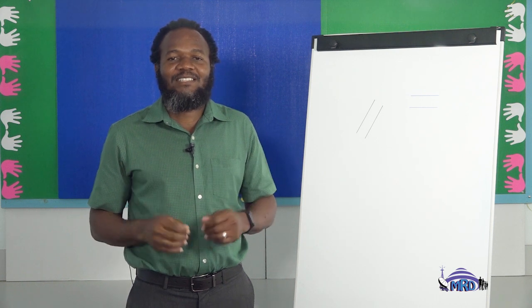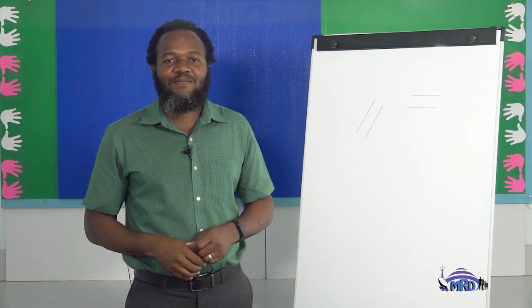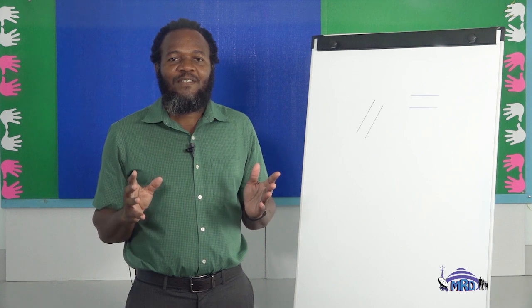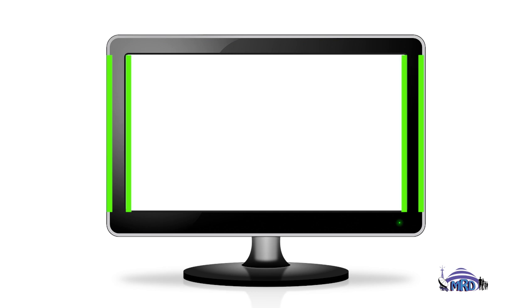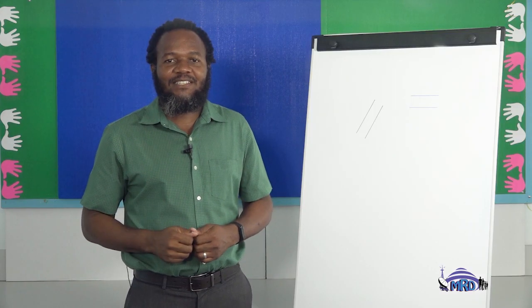From the picture of the flat screen rectangular television, indicate the lines which are parallel to each other. If you selected the lines which are equal distance apart from each other, whether they are horizontal to each other or vertical to each other, then you are absolutely correct.